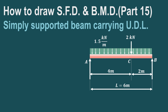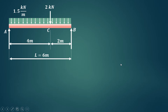In this video we will try to understand how to draw shear force and bending moment diagrams for a simply supported beam carrying a uniformly distributed load throughout the span and a point load as shown. The total span length L is equal to 6 meters, and a point load of 2 kN is acting at a distance of 4 meters from the left hand support. There is a UDL of 1.5 kN per meter acting over the entire span length.